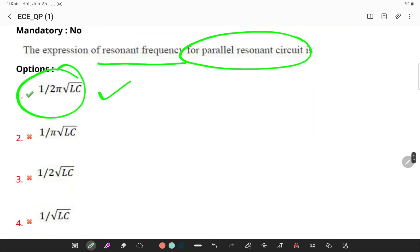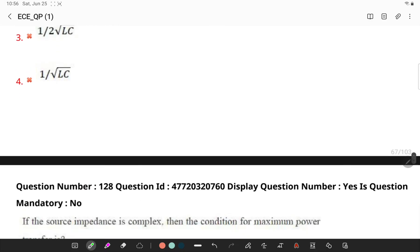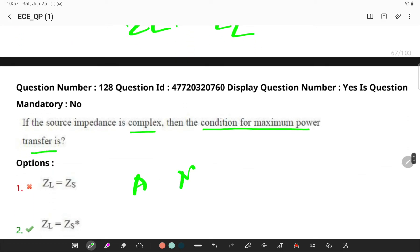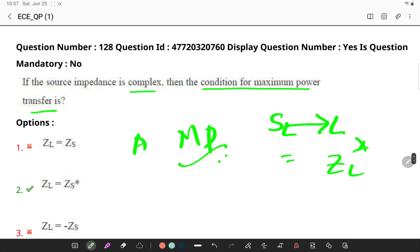Next, if source impedance is complex, then the condition for maximum power transfer is - remember when the load impedance, when source to load impedance is complex conjugate of the total impedance of the network, maximum power is transferred. So I can simply say in an AC circuit, maximum power is transferred when the source to load impedance is complex conjugate of the total impedance of the network.